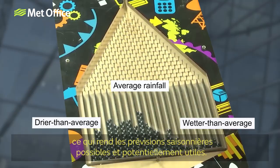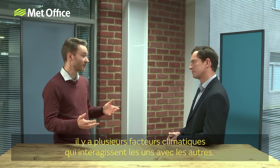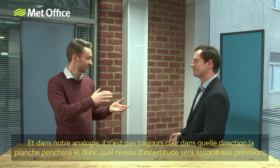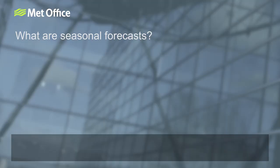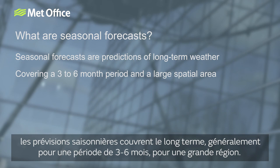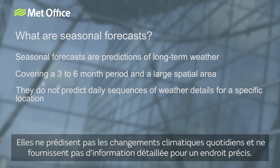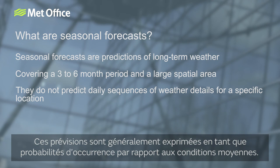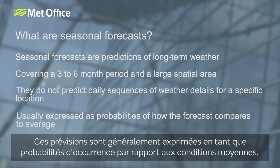Of course, the climate system is not as simple as this, and often there are several climate drivers interacting with one another. In our analogy, it's not always clear which way the board will tilt or to what extent, adding uncertainty to the forecast. In summary, seasonal forecasts are predictions of long-term weather, typically for a three to six month period and over a large spatial area. They do not predict day-to-day changes in weather or provide detailed information for a specific location. Forecasts are usually expressed as probabilities of how the forecast conditions compare to average conditions, and the fundamental reason they are possible is thanks to the slow-moving climate drivers, like ocean temperatures.